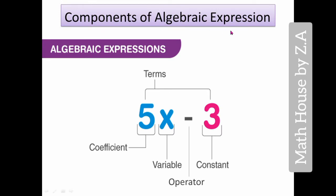Here are the components of an algebraic expression. 5x - 3, this is an algebraic expression with one operator, that is minus, and we have two terms: one is 5x, the other is 3. When you have one operator, plus or minus, you will have two terms.